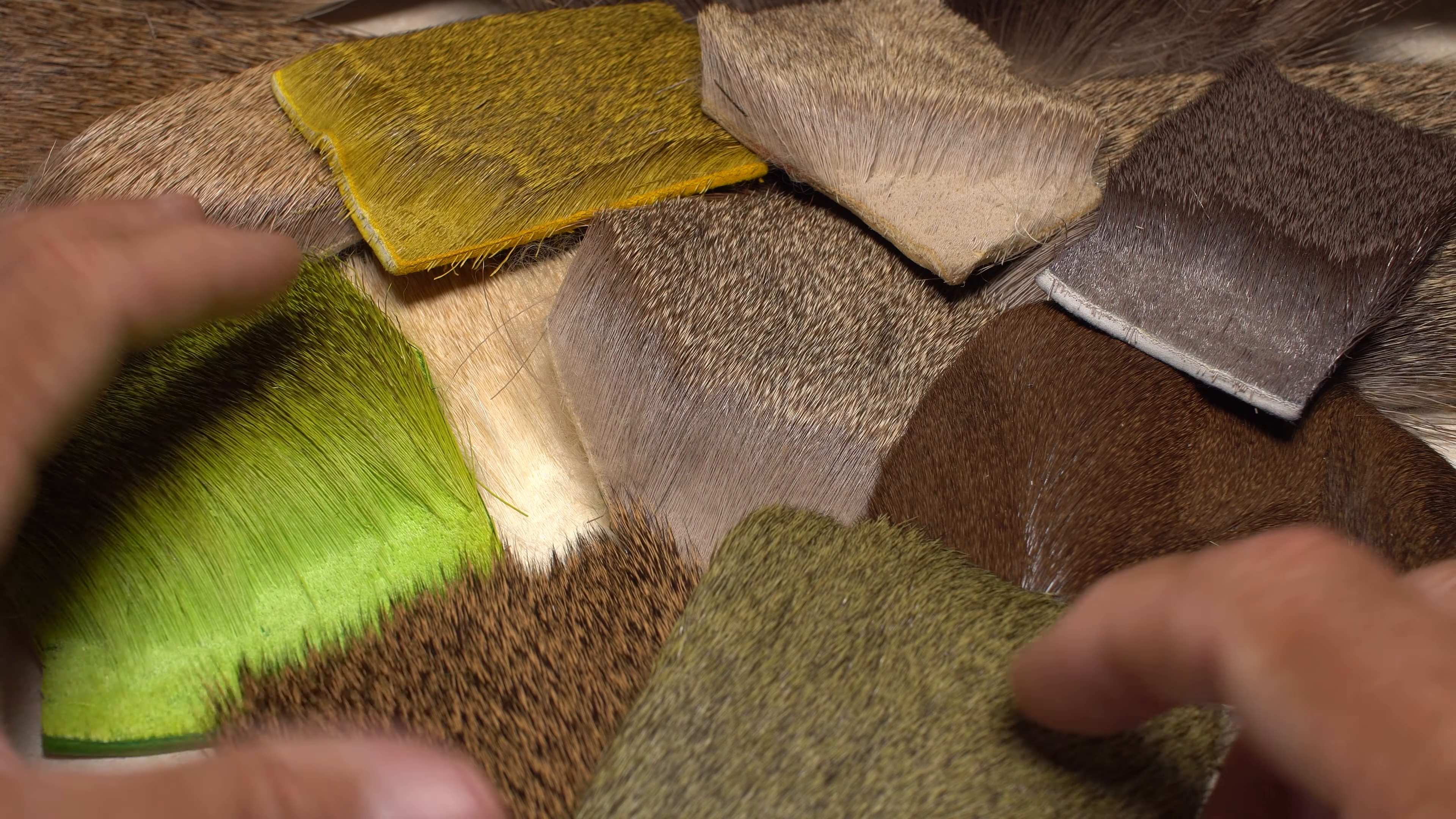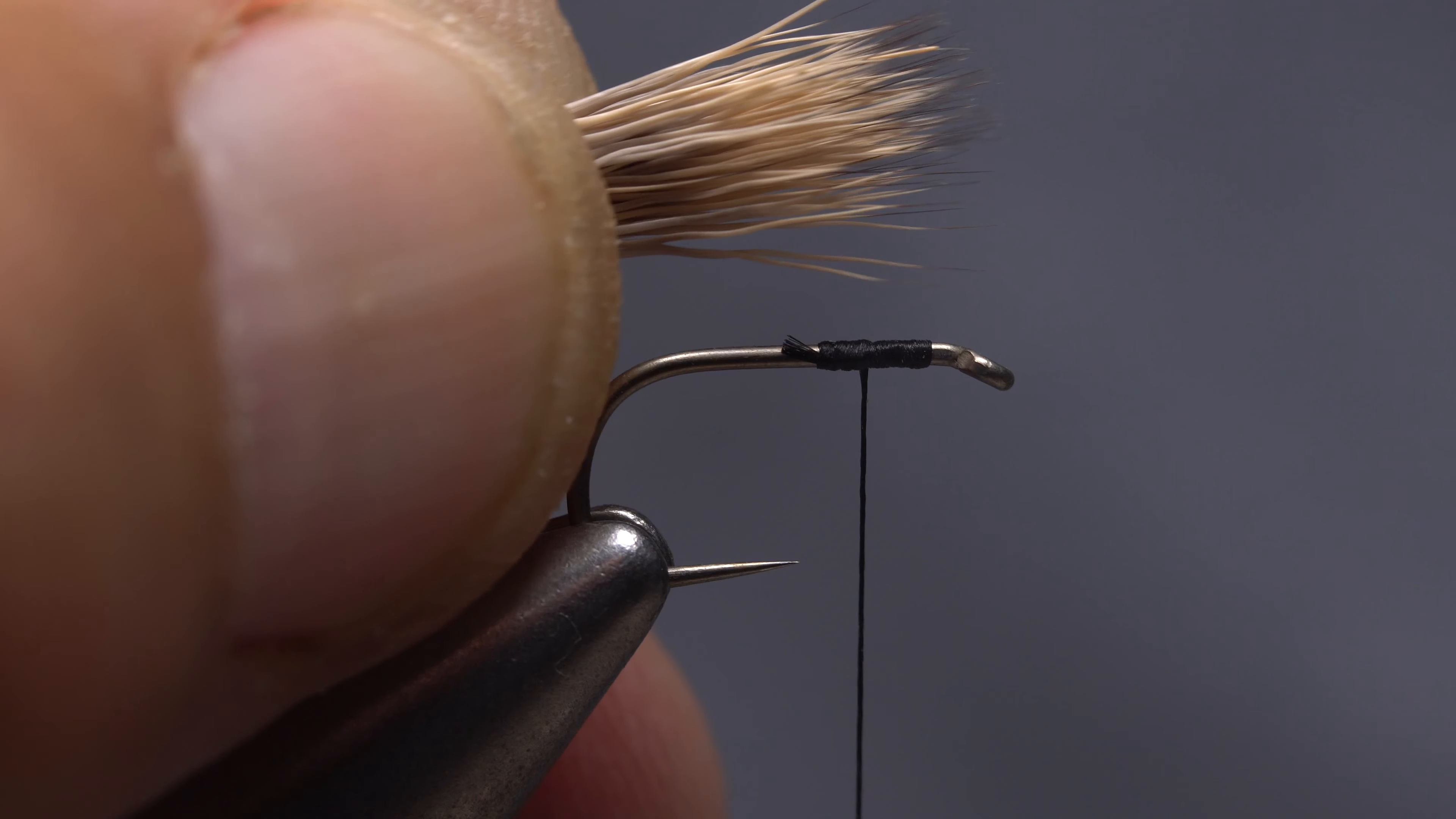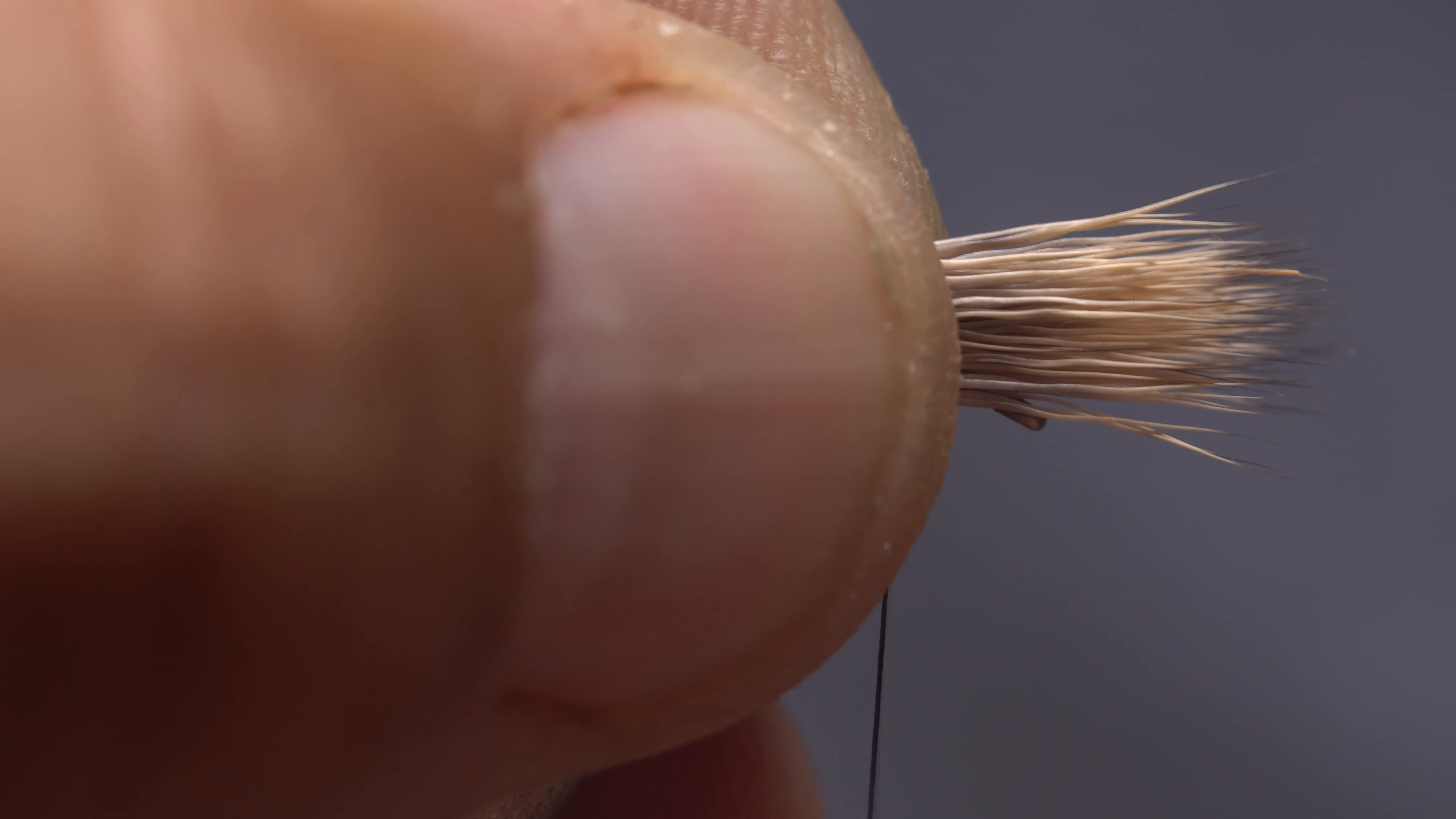With the appropriate deer hair for a comparadun selected and a small clump of it cleaned and stacked, it's time to actually tie in the wing. Measure to form a wing a hook shank in length, then transfer that measurement forward to your tying thread.